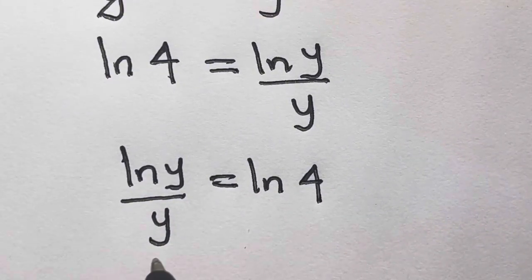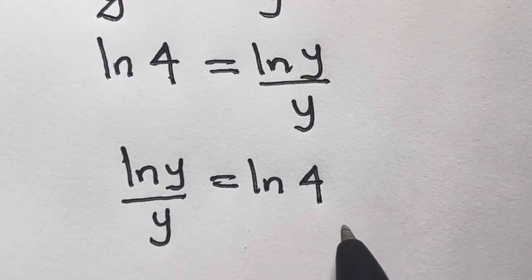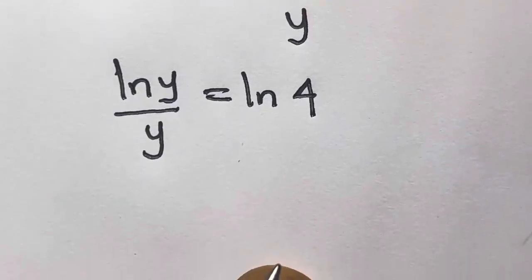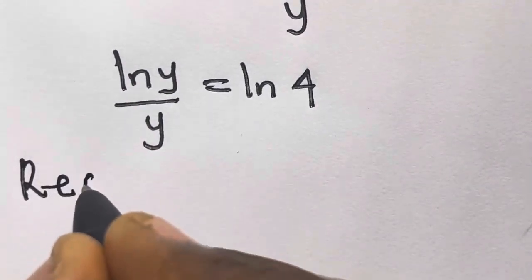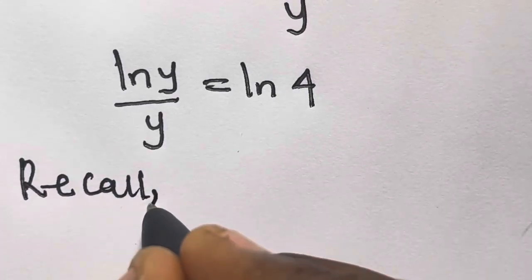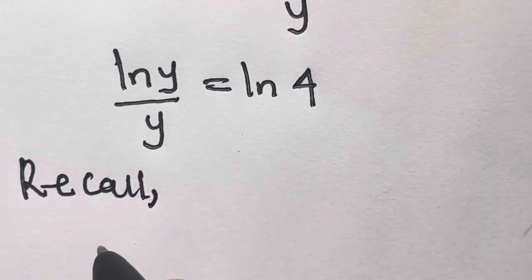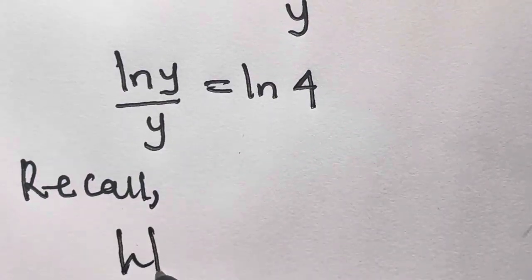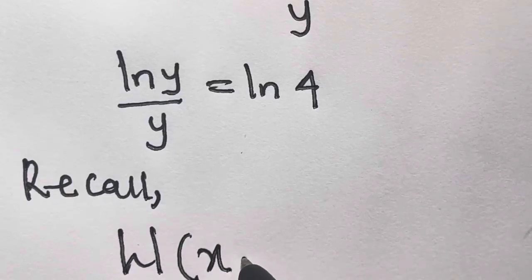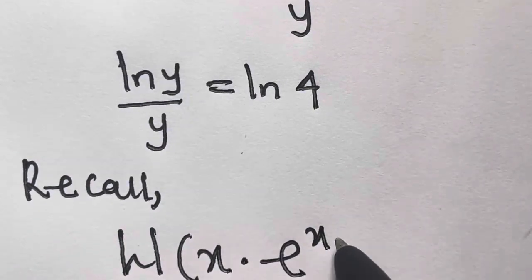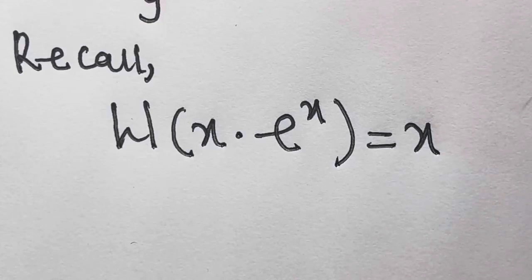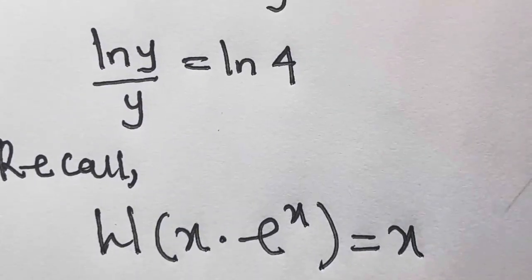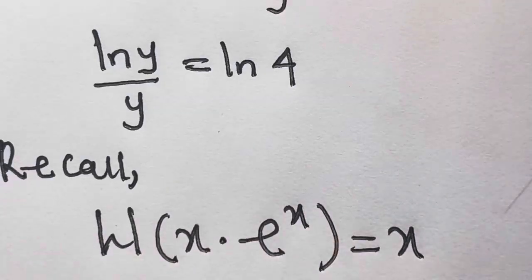So we then apply the Lambert W function on both sides. But before that, let's recall that wherever we have the Lambert W function of x times e^x, this equals x. This is the general expression. So let's create the exponential in the above expression we have here.